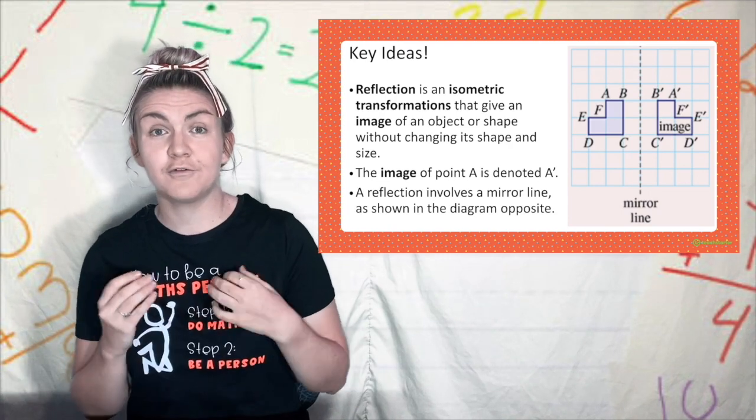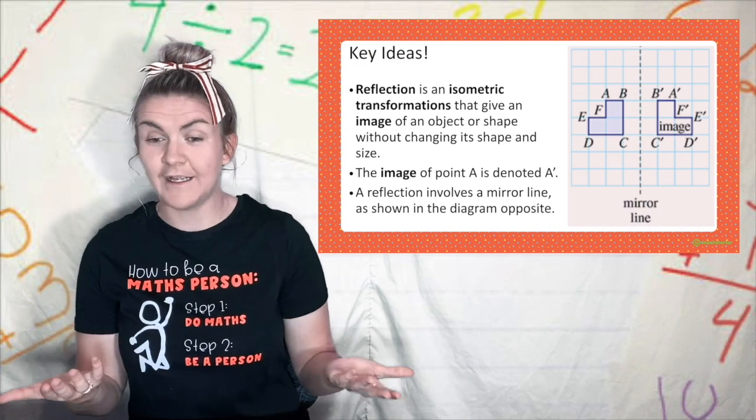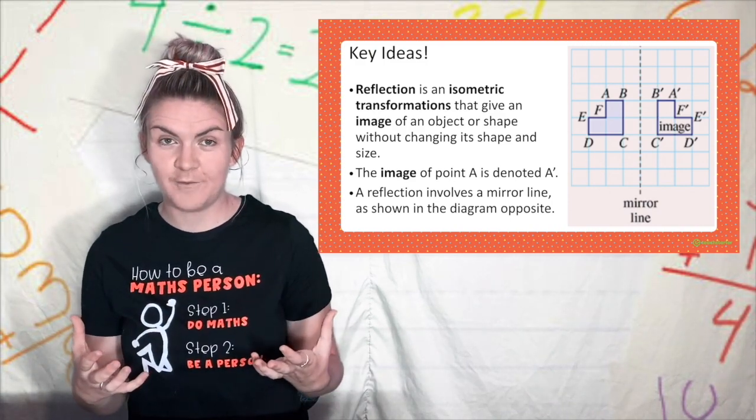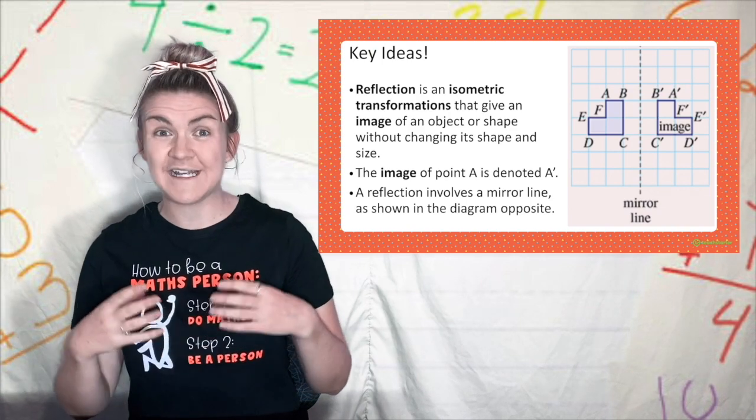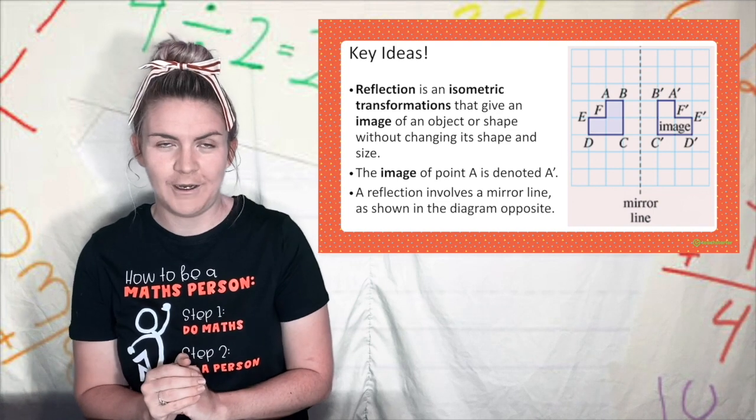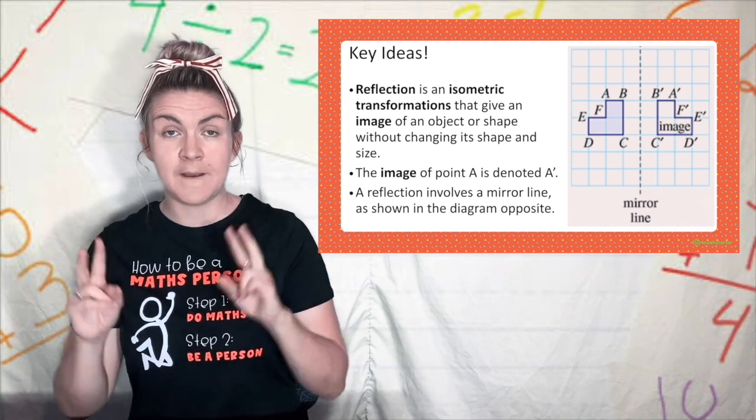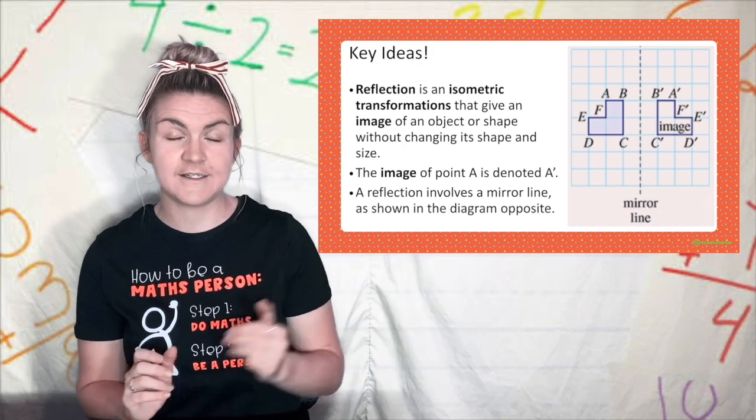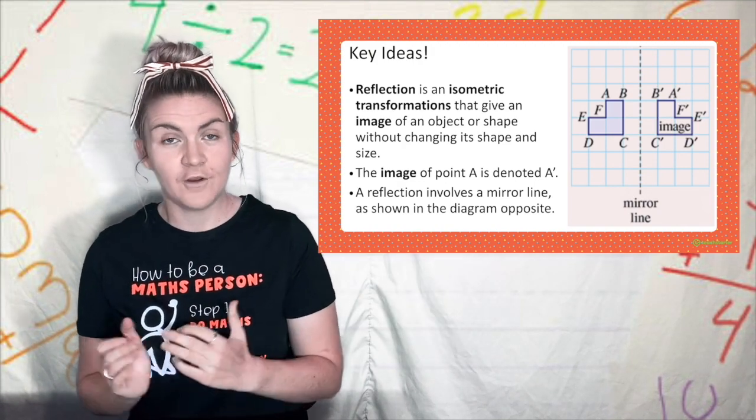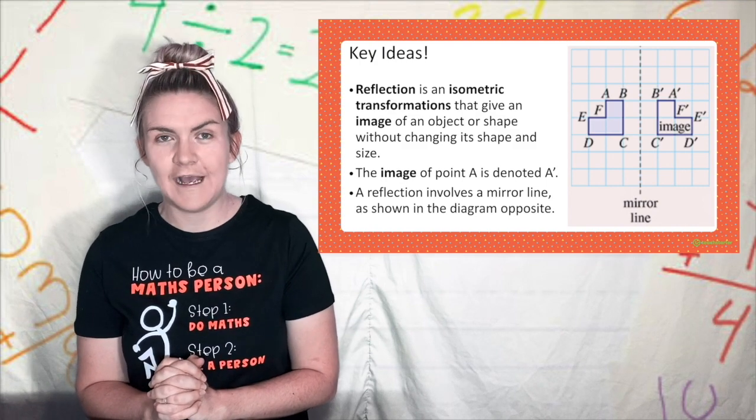When we look at the prime of a reflected image it kind of looks backwards like it's looking in a mirror. As always with transformations the image of the point a is denoted by a prime when we have our new prime that is being transformed. A reflection always involves a mirror line like you can see in the diagram here. For us we're going to be using the axes x and y as our mirror lines.